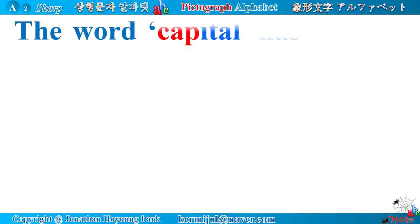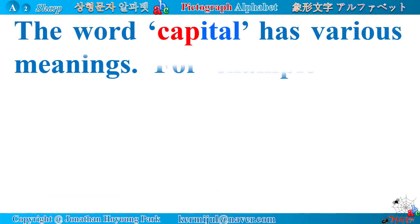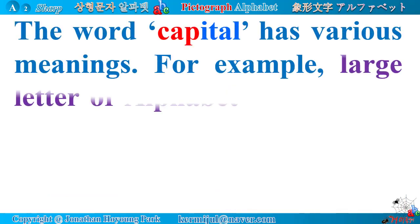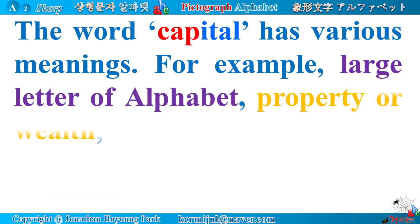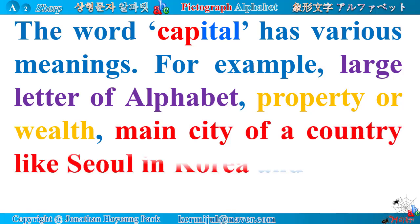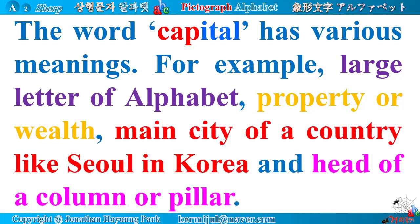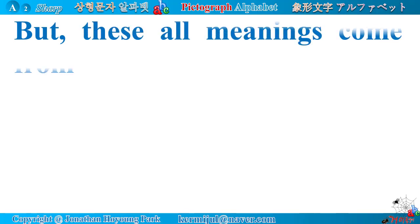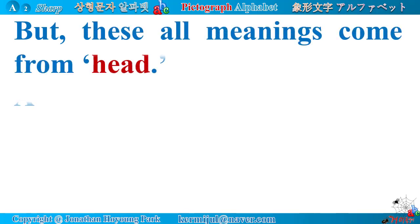A conventionalized representation of an acanthus leaf has been used especially as a decoration for Corinthian column capitals. The word 'capital' has various meanings — for example: large letter of alphabet, property or wealth, main city of a country like Seoul in Korea, and head of a column or pillar. But all these meanings come from 'head.'